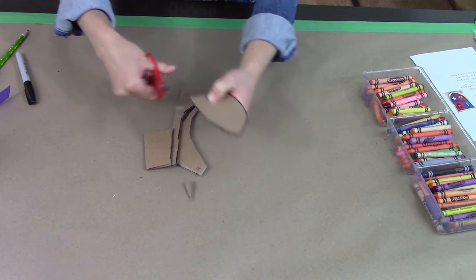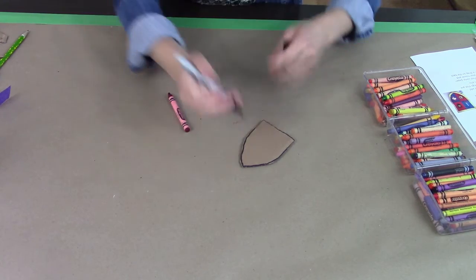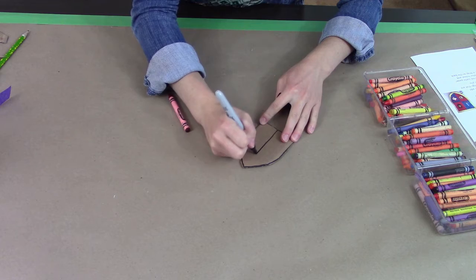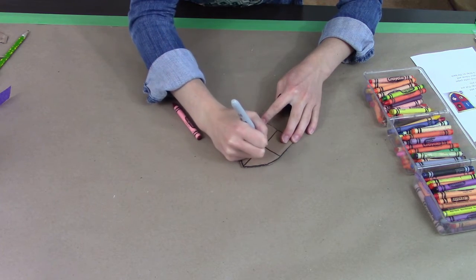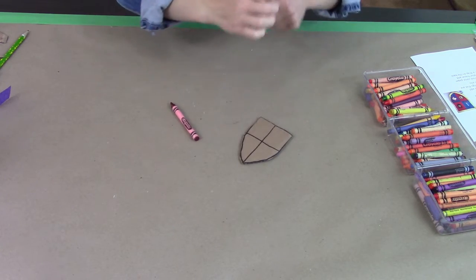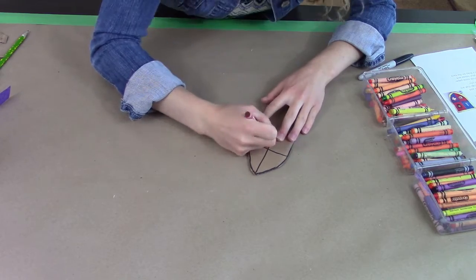Once you have that cut out you can just get rid of the rest of the cardboard and start decorating your shield. I'm going to divide mine into four sections just like the example on the instruction sheet that we gave you and I'm going to color mine red and yellow.